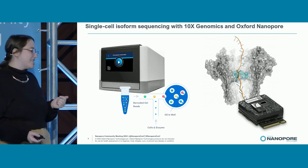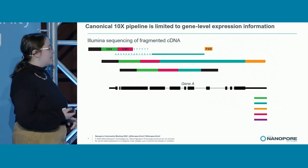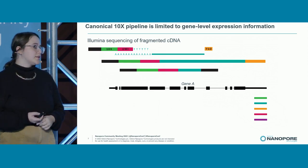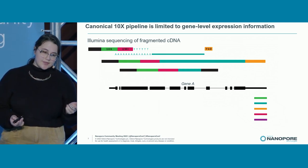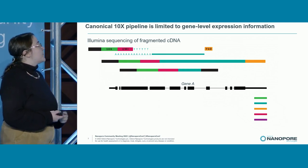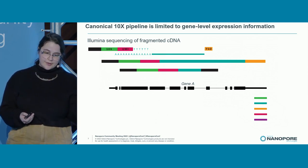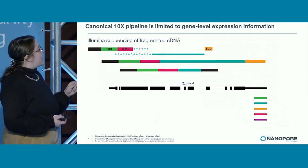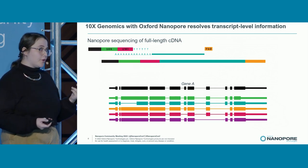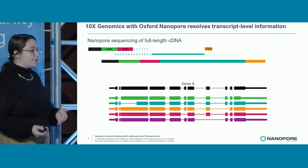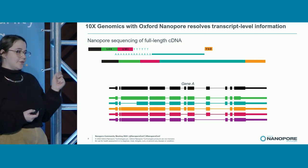The canonical 10X pipeline is intended for Illumina sequencing, so you fragment your reads, which by design gives you only gene-level information because you're restricted to capturing just the extreme three-prime end of all your cellular transcripts. But if instead you took this full-length barcoded cDNA and rather than fragmenting it, sequenced it on Oxford Nanopore, theoretically you'd now have gene-level expression information plus really juicy transcript isoform-level information while retaining single-cell resolution.